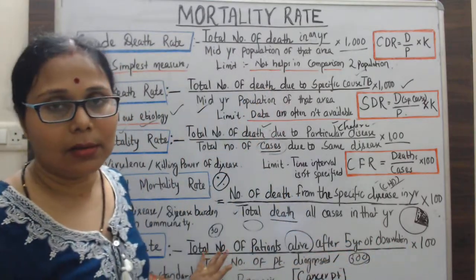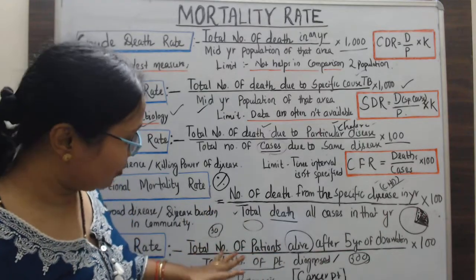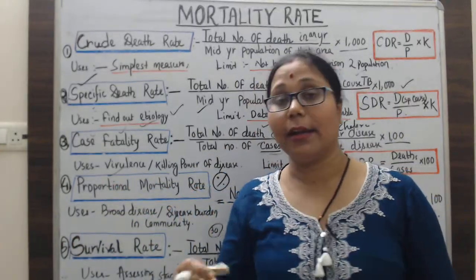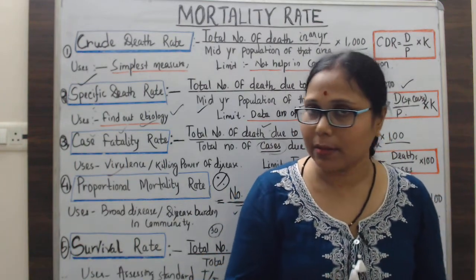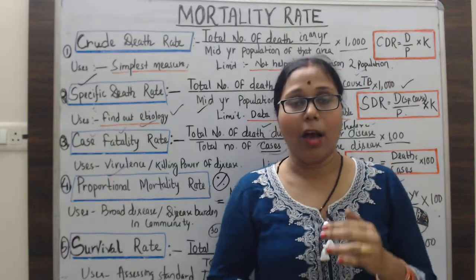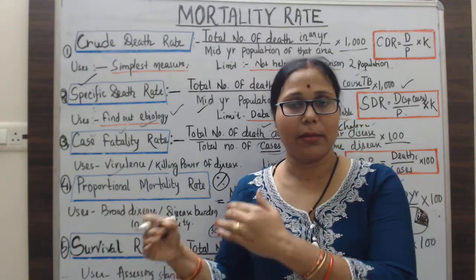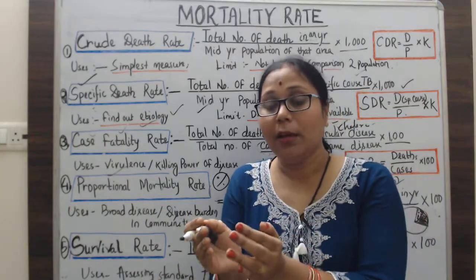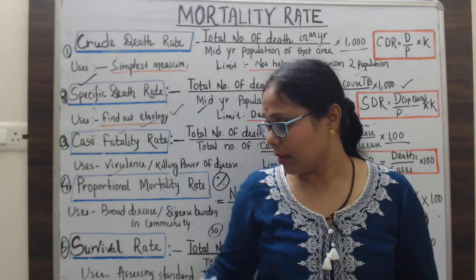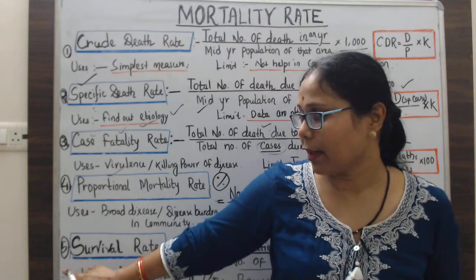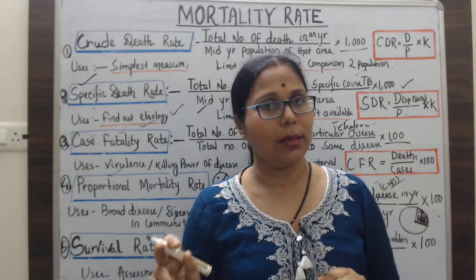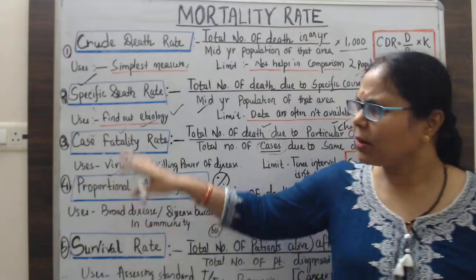The figure obtained gives the survival rate. This rate is useful for assessing the standard of treatment and modern technologies, such as chemotherapy and advanced therapies. It shows how much prognosis has improved and how many patients can be helped to survive. The survival rate is mainly used in the study of cancer cases.